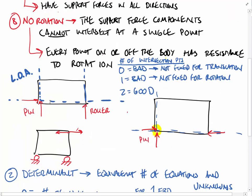Looking at this graphically, if we sketch in the lines of action of pin forces at the lower left corner and roller forces on the right-hand side, these lines of action intersect at two separate points — here's one point, here's another. Two points of intersection is good. One point would be bad. If we flip that roller onto its side and all lines of action intersect at this single pin, it is not fixed for rotation. Summing moments at this pin, there are no support forces to resist rotation, so the body could rotate about that point.